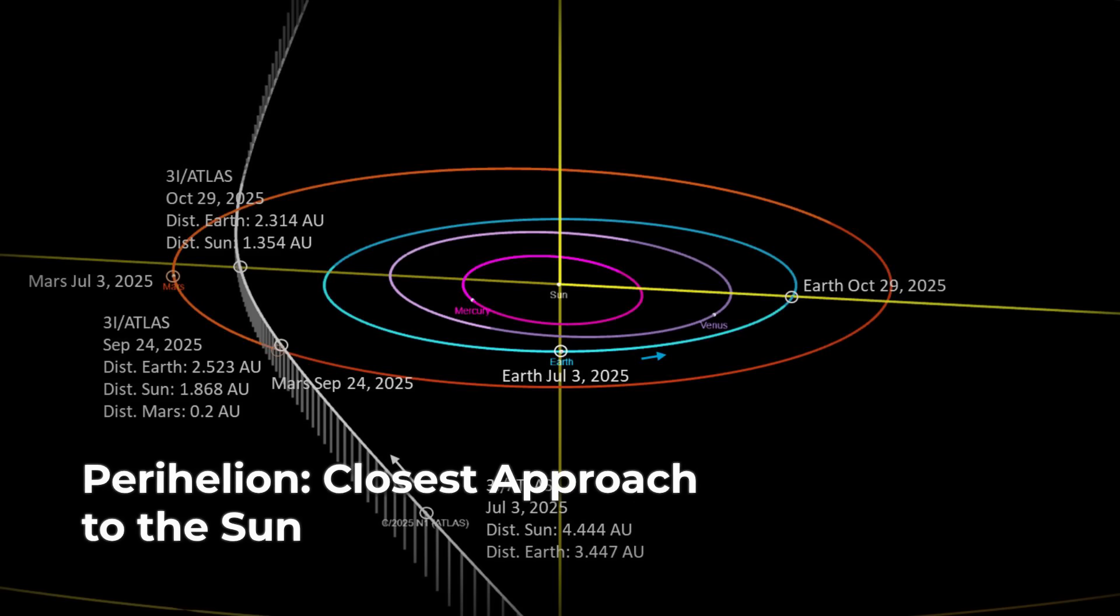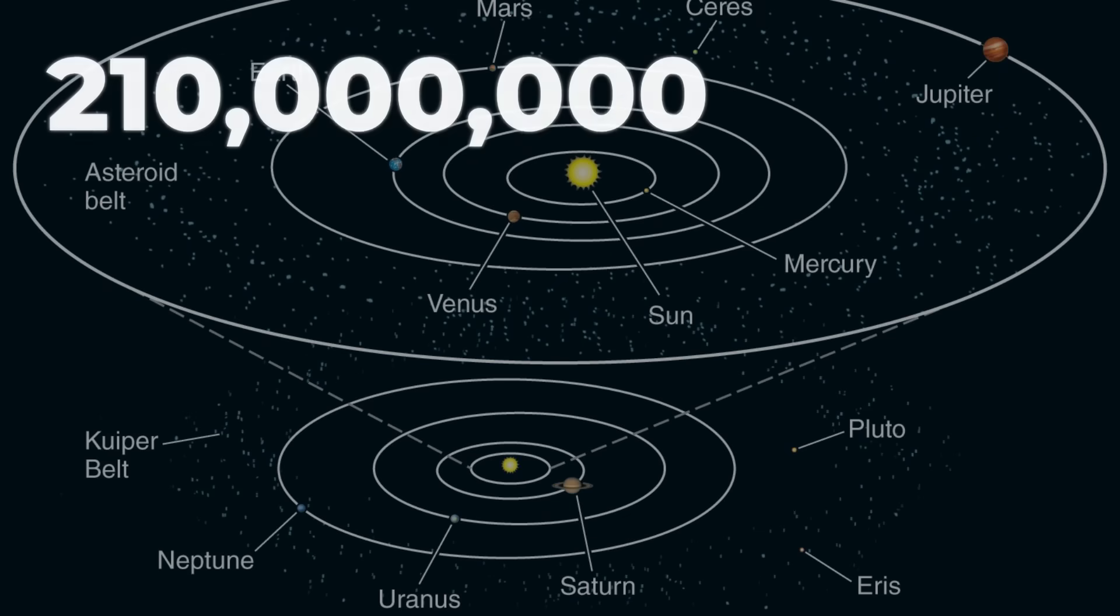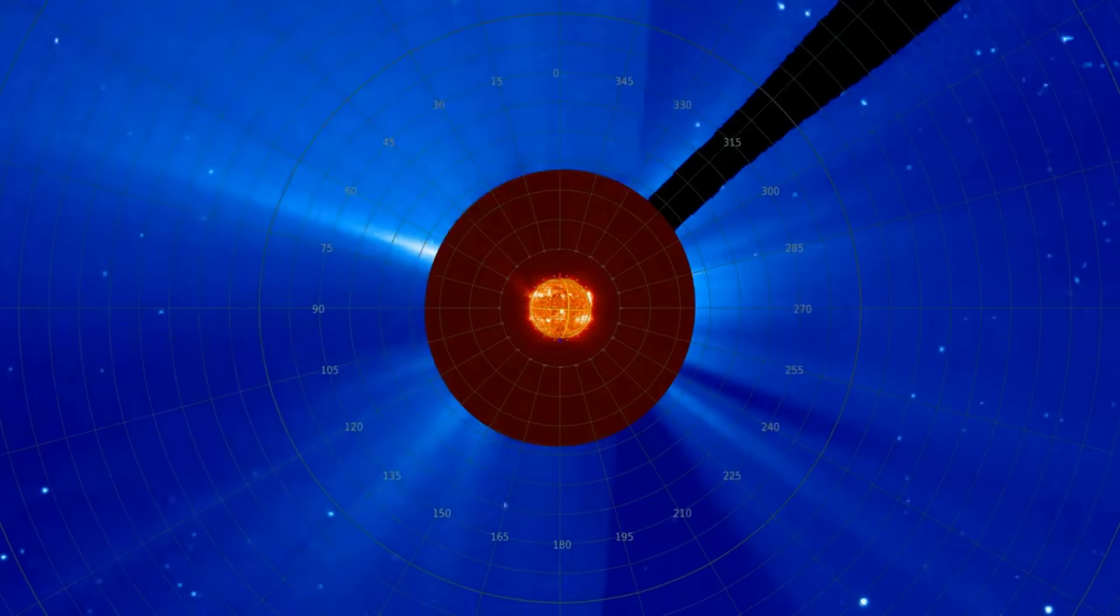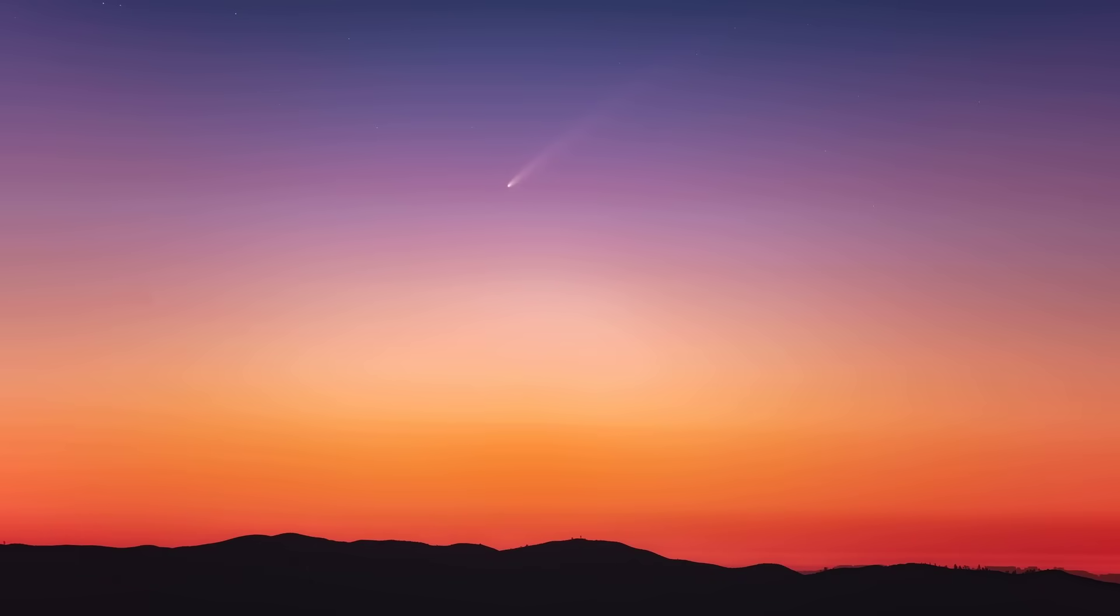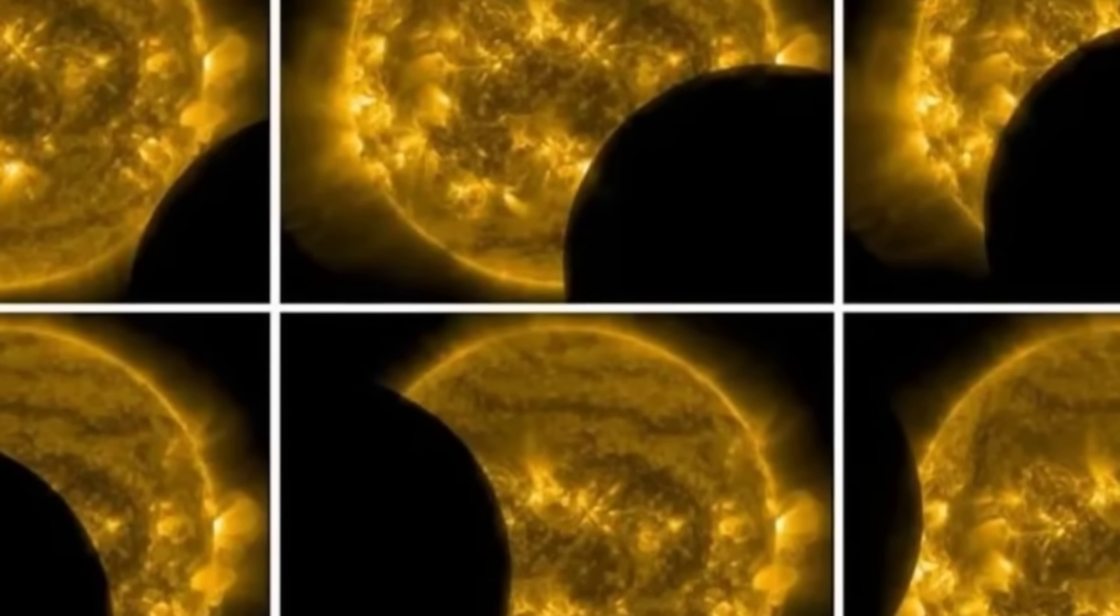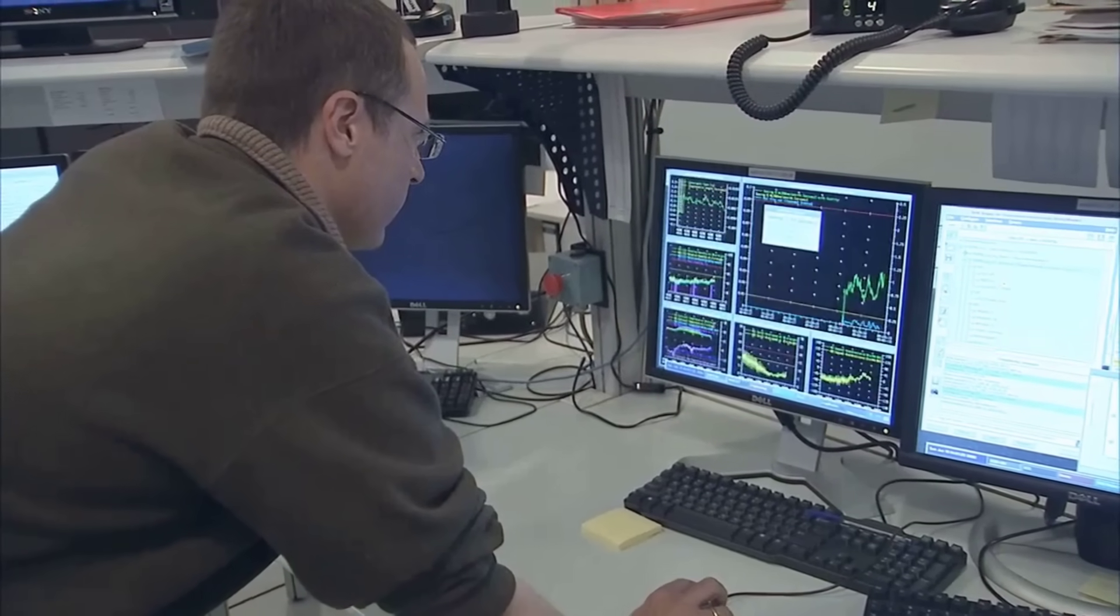Closest approach to the sun, perihelion, comes on October 30, 2025, at a distance of 1.4 astronomical units. That is about 210 million kilometers out, just inside the orbit of Mars. As it races toward the sun, the glare grows stronger. Ground-based telescopes will lose their shot by late September, when the object sinks into the sun's morning light. After that, the data stream goes dark.